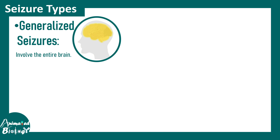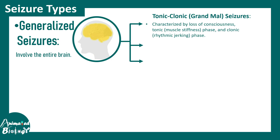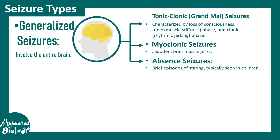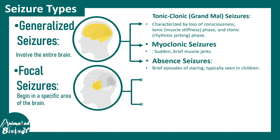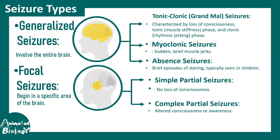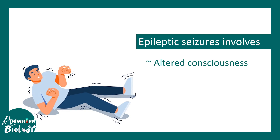Generalized seizures can be subdivided into tonic-clonic seizures — characterized by unconsciousness, a tonic (muscle stiffness) phase, and a clonic (rhythmic jerking) phase — myoclonic seizures, which produce a sudden brief jerk in the muscles, and absence seizures, which are brief episodes mainly seen in children. Among focal seizures, there are simple partial seizures, which do not lead to loss of consciousness, and complex partial seizures, which lead to altered consciousness and awareness.